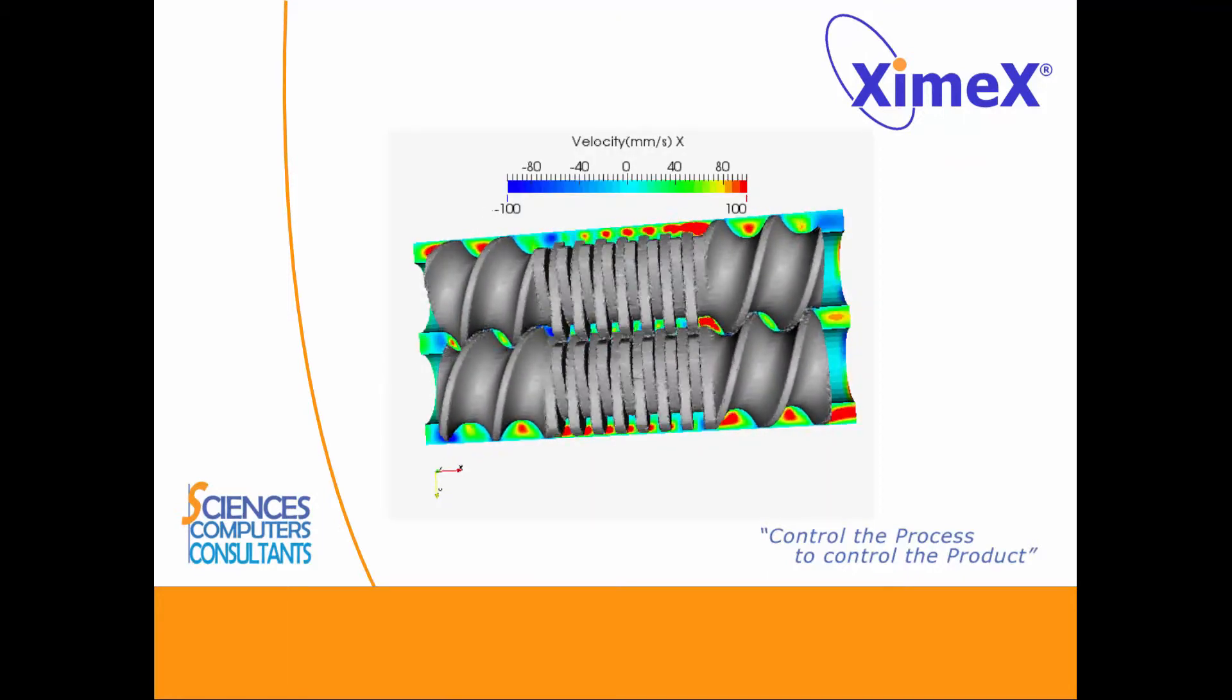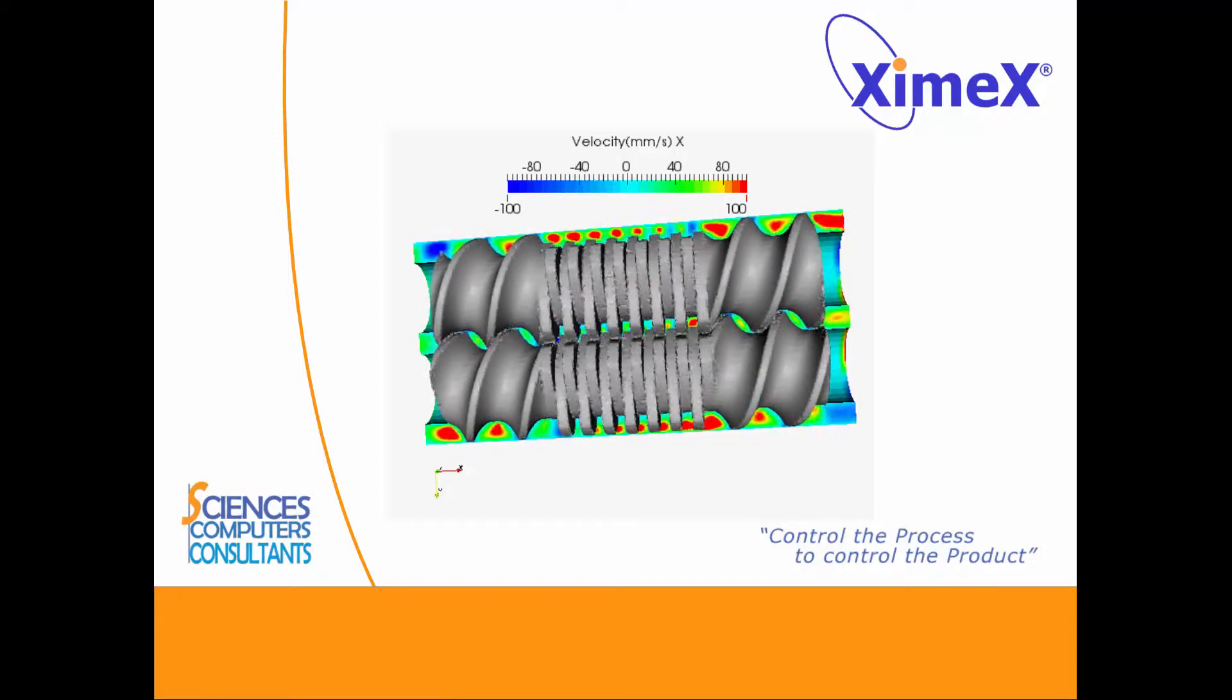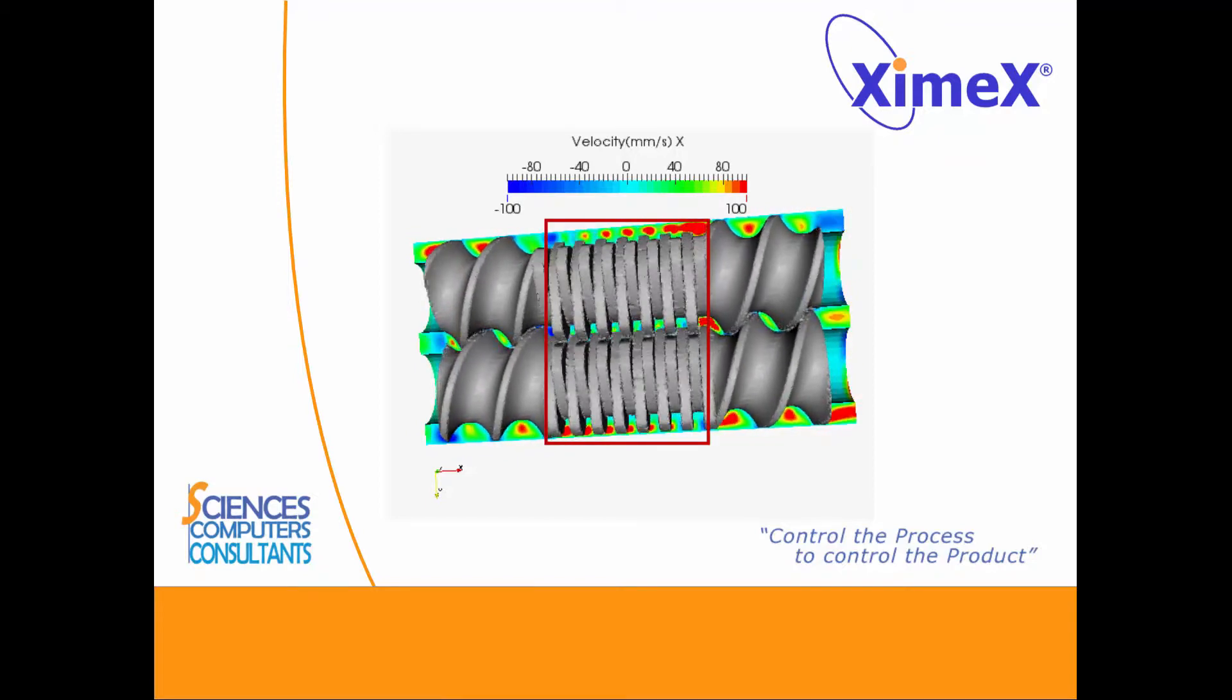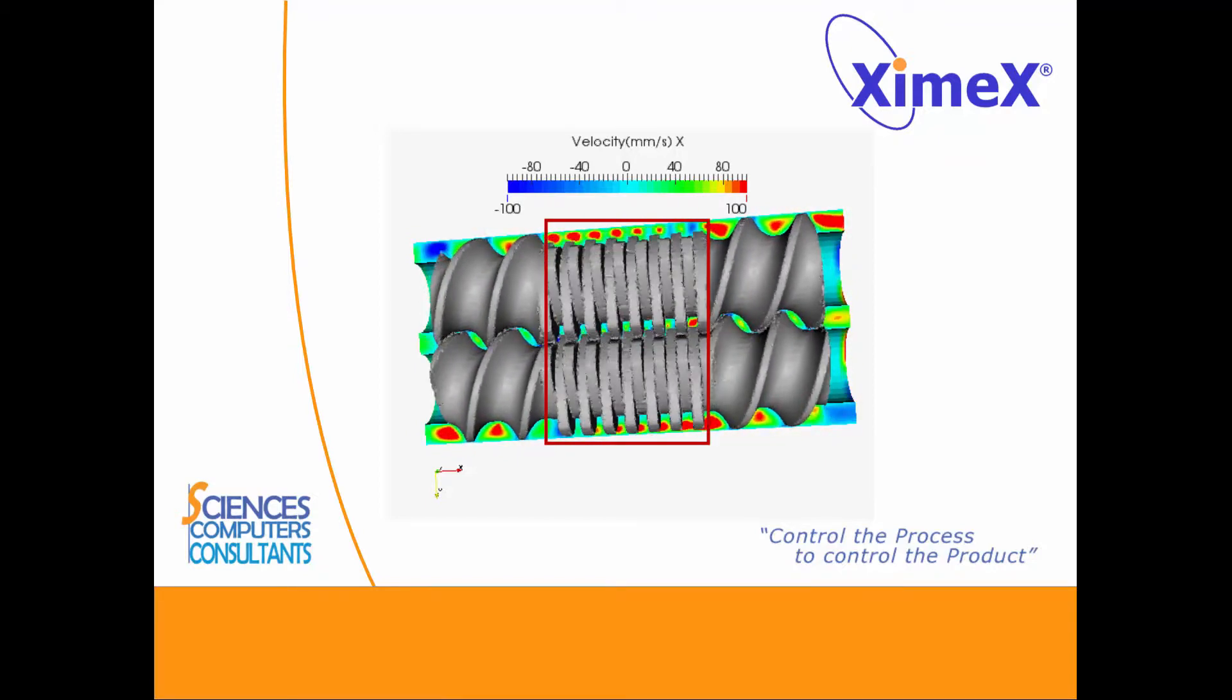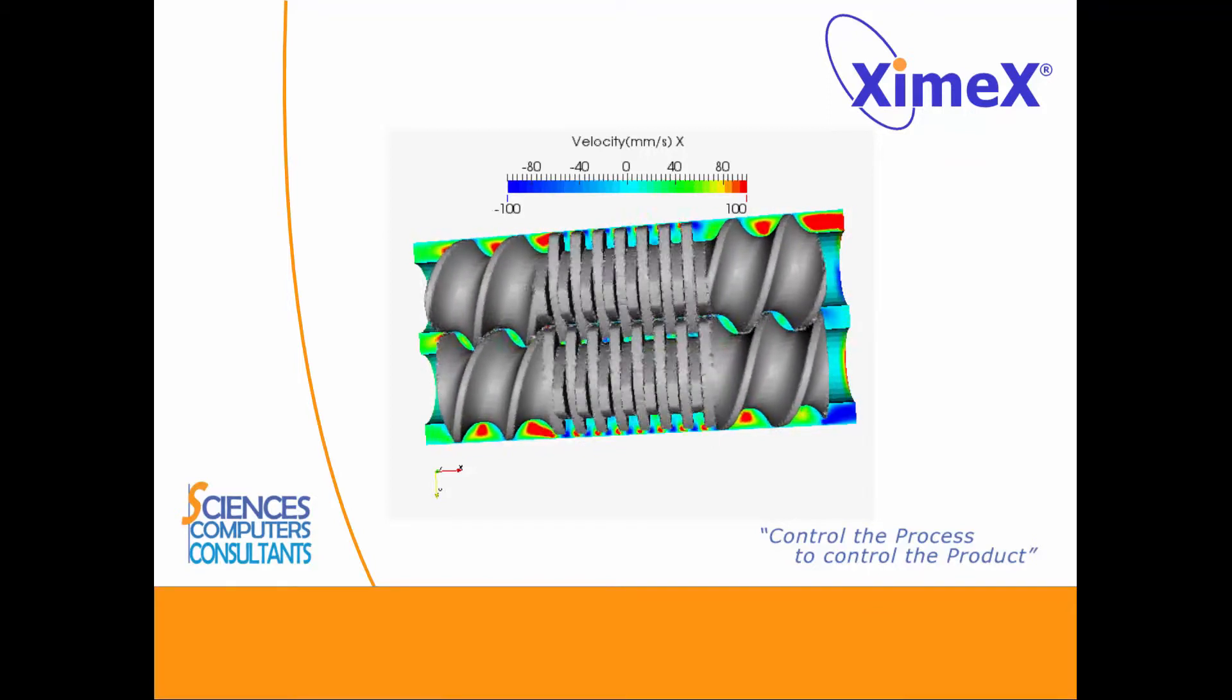Here we can see the velocity fields in the x-axis, which is the direction of extrusion. In the mixing zone, we can see an alternance of positive and negative velocity.